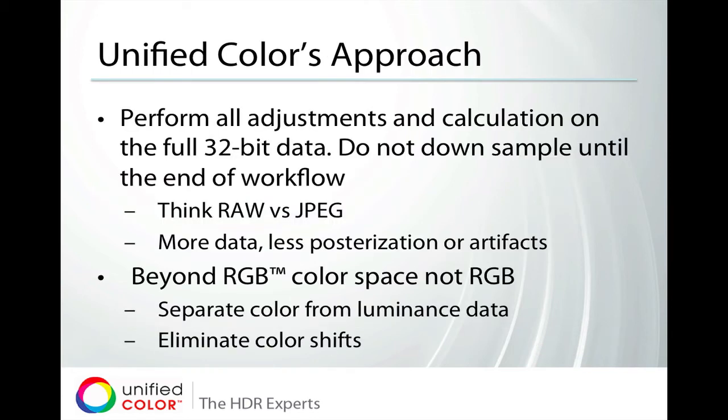Unified Color's approach is a little bit different from other HDR software on the market. We perform all of our adjustments and calculations on the full 32-bit data and do not downsample until the very end when you're done processing and want to save the file as a TIFF or JPEG. A great analogy is the advantages of working on a RAW file versus shooting in JPEG — you just have so much more information to work with, more levels of gray, more gradation, and you can make more changes to the image without inducing posterization.